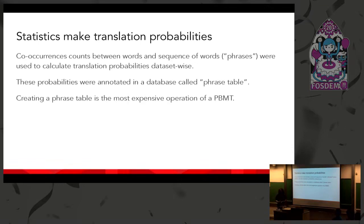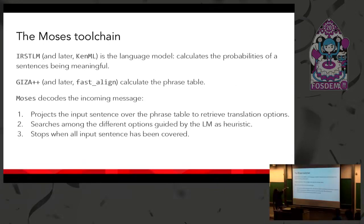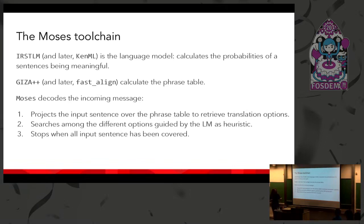The Moses toolchain is based on three technologies: the language model — KenLM — which calculates the probability of a sentence being meaningful; the aligner — Giza++, later superseded by fast_align; and Moses itself, which decodes the incoming message. Moses projects the input sentence over the phrase table to retrieve translation options, searches among all options guided by the language model as a heuristic, and stops when the entire input sentence has been covered.